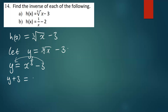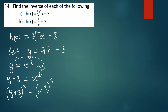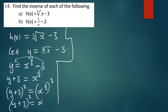Now, to get rid of this power one over three, I'm going to raise both the left-hand side and the right-hand side by three. So we have y plus three raised to the power three, equal to x raised to the power three over three, which just gives us x. So x equals y plus three to the power three. We have managed to make x the subject.